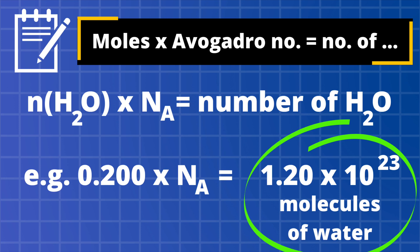At A-level we can take this further. Since there are two hydrogens per molecule of water, doubling that quantity gives the number of hydrogen atoms in the sample — 2.40 × 10²³. Alternatively, you could multiply the 1.20 × 10²³ by the number of protons in one molecule of H₂O to get an estimate of the total number of protons in the entire sample. There are lots you can do with this number, so feel free to get adventurous with your calculations.